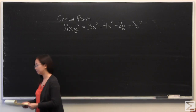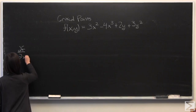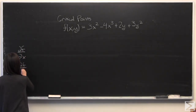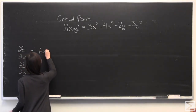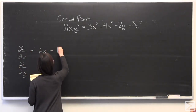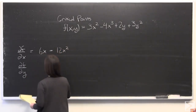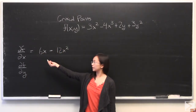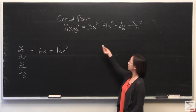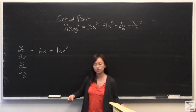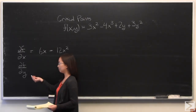I'm going to start with the partial derivative of f with respect to x, and the partial derivative of f with respect to y. So I took the partial derivative with respect to x, and it's very simply 6x minus 12x squared. These y terms have no dependence on x, so when we take the partial derivative, those vanish. Same deal with the partial derivative of y.